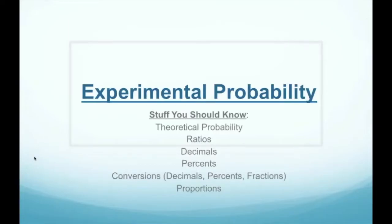Hello again. Welcome back to Mr. Ace Math. This lesson is on experimental probability. It's a little bit different from theoretical probability. Some stuff you should know are basically what theoretical probability is, ratios, decimals, percents, conversions between decimals, percents, and fractions, as well as proportions. So make sure you know those, and let's get started.